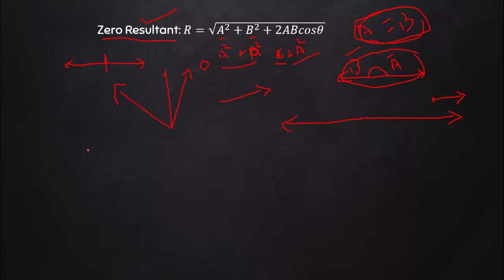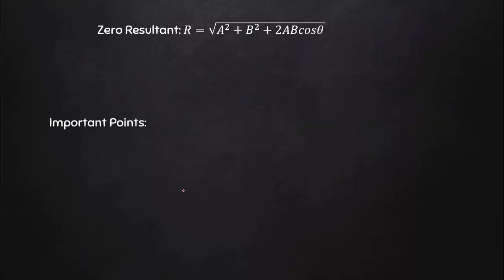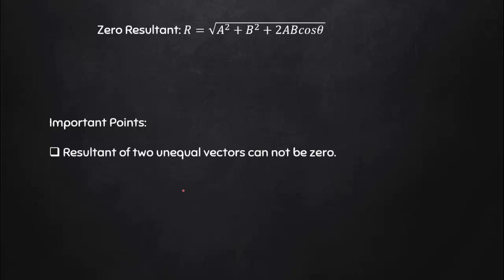Two important things about vector addition: First, the resultant of two vectors is zero only when they are in exactly opposite directions with equal magnitude. If both vectors are unequal, the resultant can never be zero — if A and B are different values, the result will be non-zero.